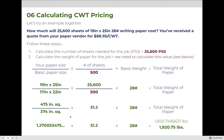Let's work through an example. How much will 25,600 sheets of 19 by 25, 28-pound writing paper cost? You've received a quote of $88.95 per CWT. If the price says per M, that's M-sheet pricing; if it says per CWT, you need to know the weight. Step one: the number of sheets is 25,600. Step two: calculate the weight of the paper — this references the paper weights lesson and formula.